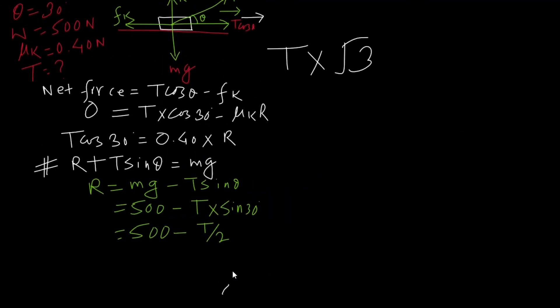R is mg minus T sin theta. We have mg as 500, so R equals 500 minus T times sin 30 degree, which is 500 minus T by 2. Putting this in the equation: T times root 3 by 2 equals 0.40 times (500 minus T by 2). This gives root 3 by 2 T equals 200 minus 0.2 T. After solving this, you will find 187.61 Newton tension.